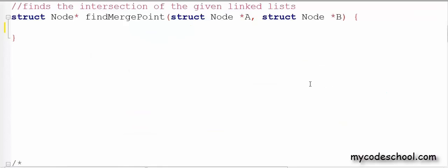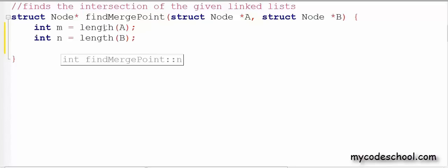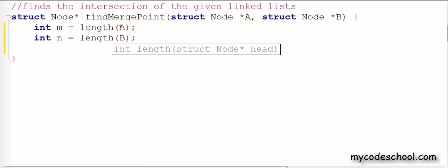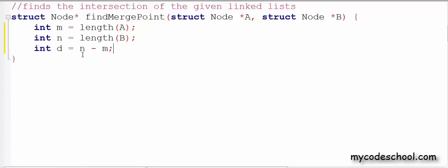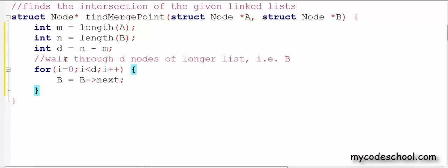Like before, we initially find the lengths of both the linked lists A and B and store them in M and N respectively. Now we can calculate the value of D which is n minus m. So we can walk through the D nodes of the longer list that is B. To do so, we run a for loop D times and in every iteration make B point to its next.